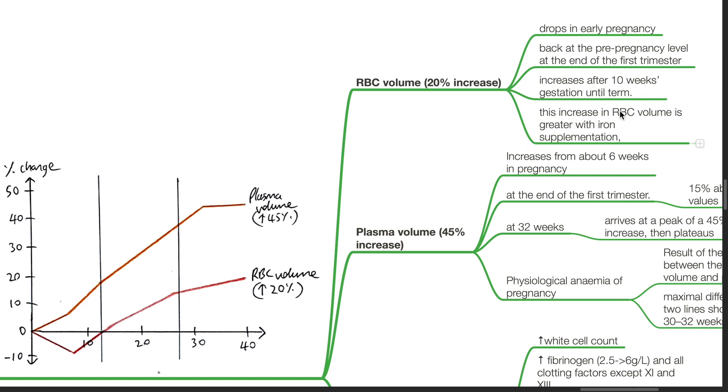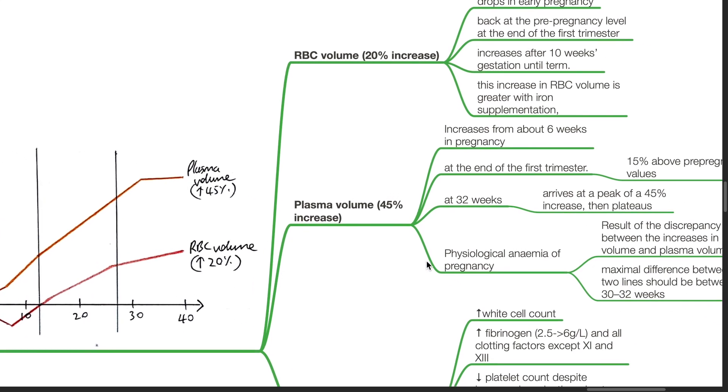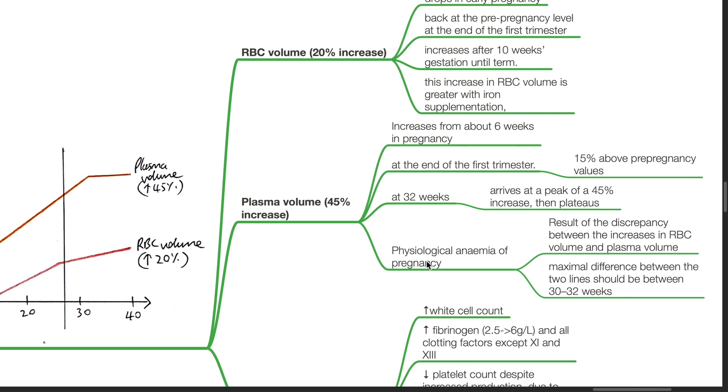Plasma volume increases by 45%. It increases from about 6 weeks in pregnancy. At the end of the first trimester, it is 15% above pre-pregnancy values.